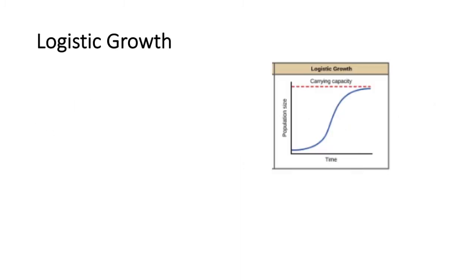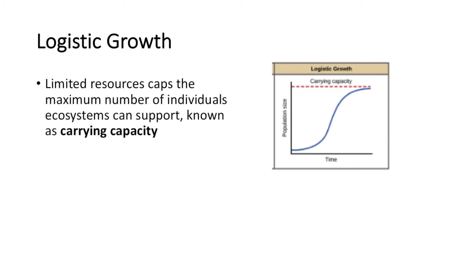Let's talk about another type of growth model: logistic growth. In logistic growth, there are limited resources that tend to cap how many individuals an ecosystem can support, and this cap is known as the carrying capacity — the maximum number of individuals that ecosystem has resources to support.